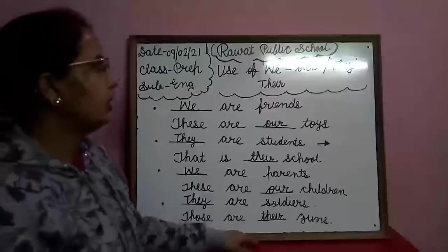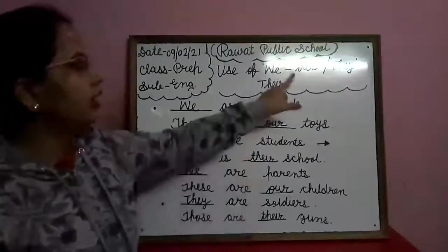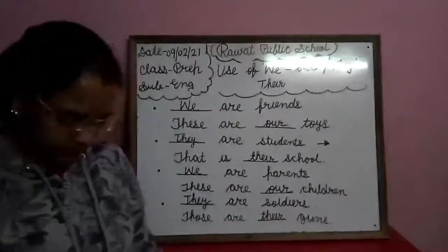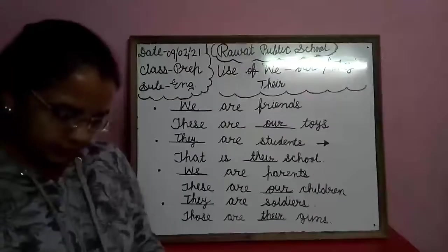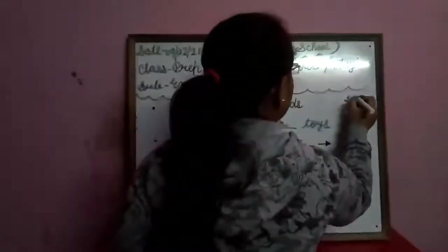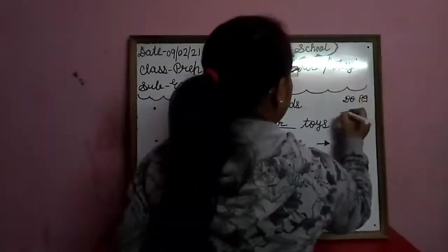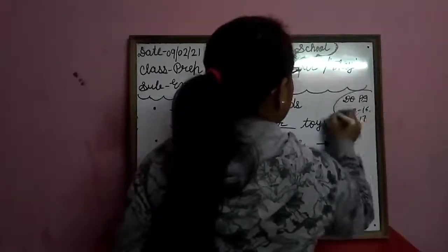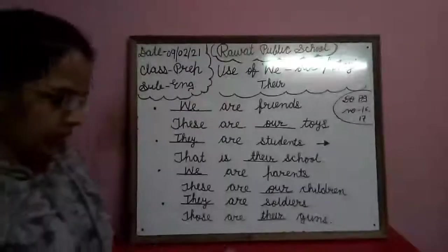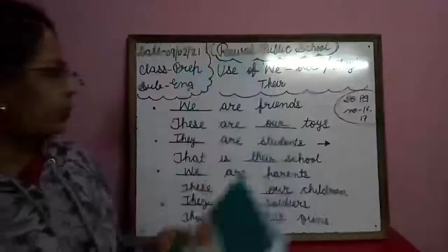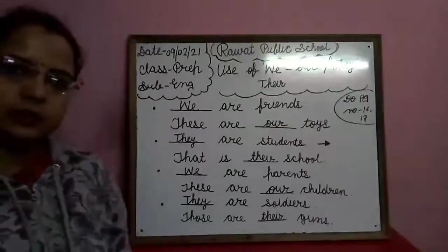Okay, so children, please — I think you all have understood the use of We, Our, They, Their. So please do page number 16 and 17. In this book, do page number 16 and 17. Thank you.